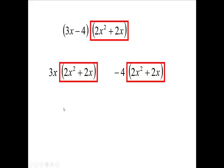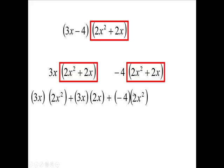So I have 3x times 2x squared, and then I have 3x times 2x, and then I have minus 4 times 2x squared, and I have minus 4 times 2x.